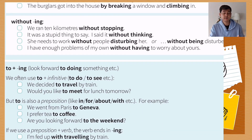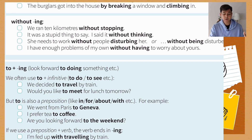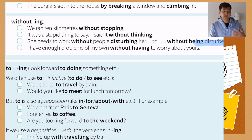Now 'without' is also a preposition, so it needs to be followed by verb -ing. 'We ran 10 kilometers without stopping.' 'I said it without thinking — it was a stupid thing to say.' 'She needs to work without people disturbing her,' or in the passive meaning: 'She needs to work without being disturbed' — 'being disturbed' has a passive meaning, and we can use 'being' plus past participle. And: 'I have enough problems of my own without having to worry about yours.'